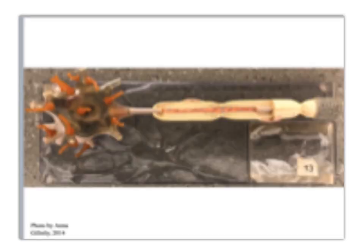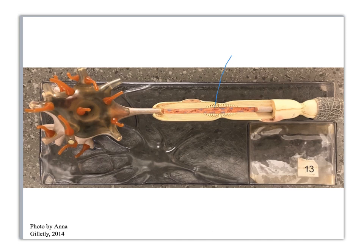Here's the model of the multipolar neuron. Let's go through here really quickly. Axon — this is the Schwann cell. This whole thing is considered a myelin sheath; it's the bundle of Schwann cells all stuck together. This gray webby stuff is the endoneurium.